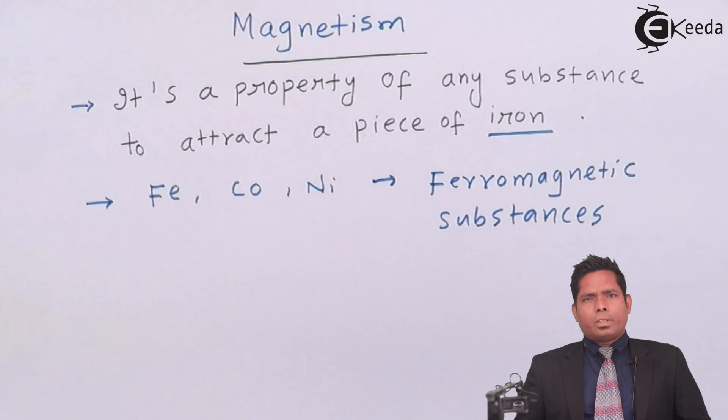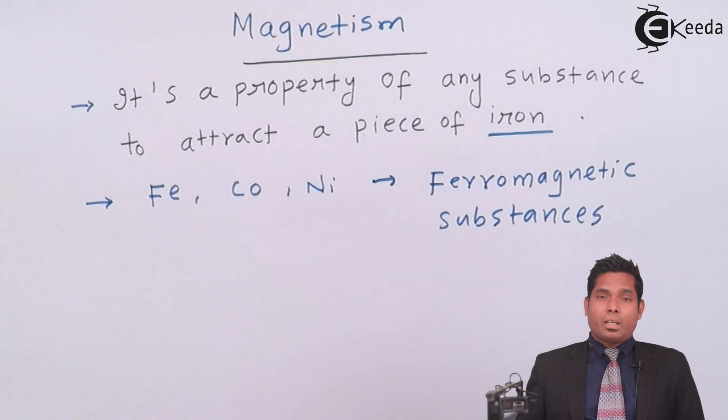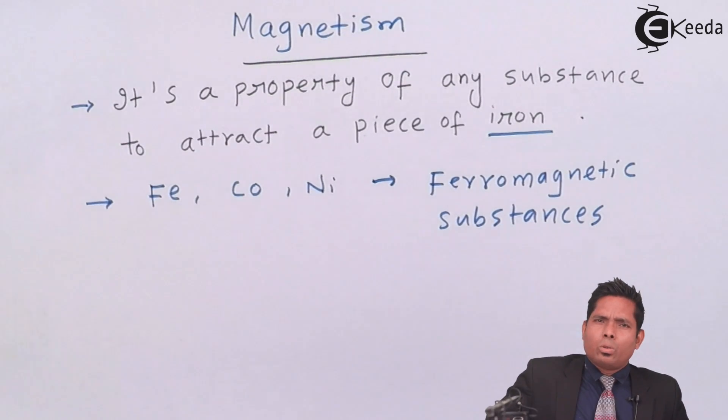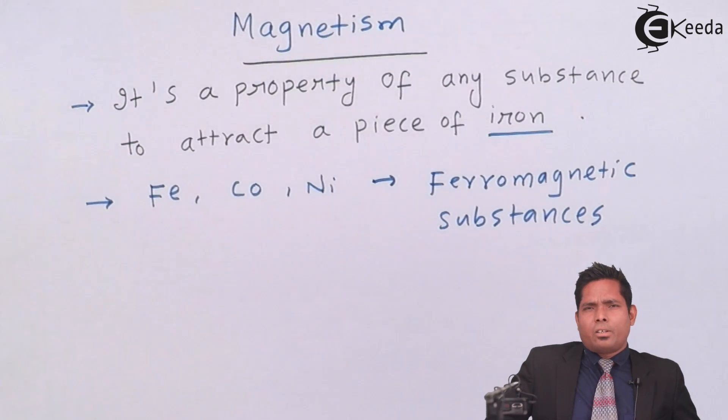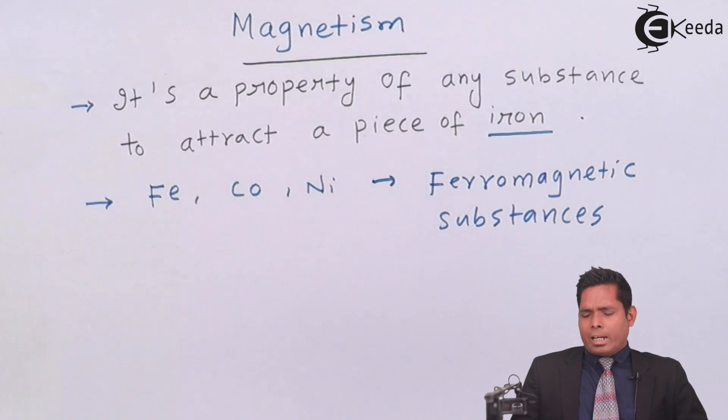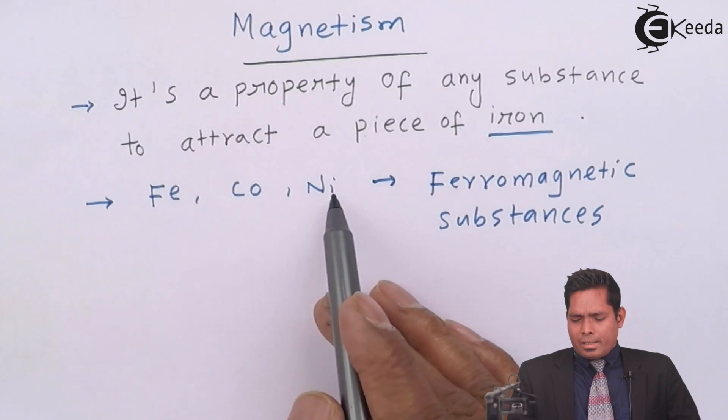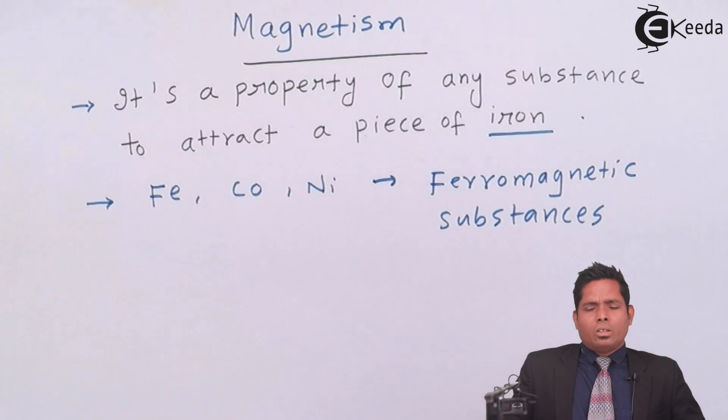They are all the substances, whether solid, liquid, gas, we call them as magnetic substances. But to the degree, the extent to which they exhibit their magnetic properties, they are categorized into diamagnetic, paramagnetic, ferromagnetic. That will study in the next standard. But for the time being, iron, cobalt, nickel, the magnet can attract any of the three substances.